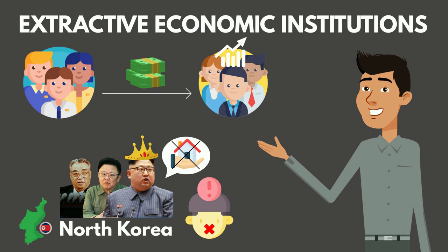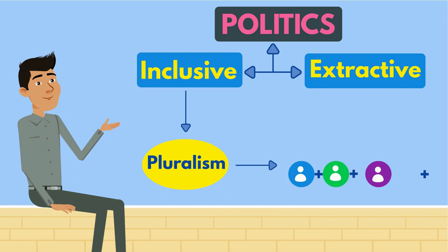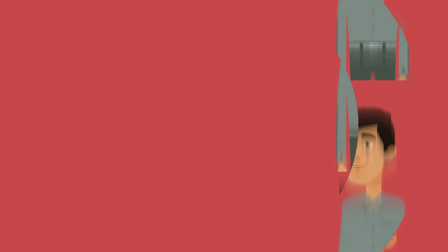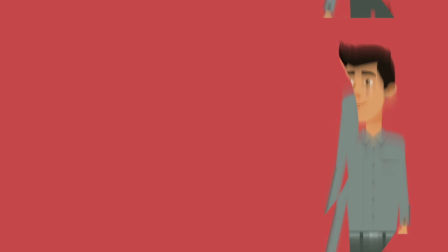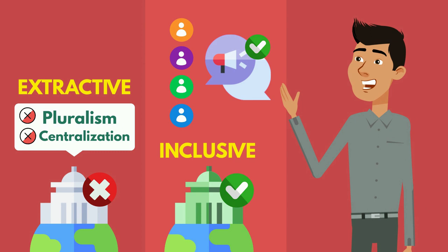An extractive economic institution receives income from one group in society for the benefit of another group. An example is colonial Latin America, built on the exploitation of indigenous people to benefit colonizers. Another example is North Korea, where the Kim family created a repressive regime that didn't allow private property and secured all power for the select elite only. Similarly, politics can also be either inclusive or extractive. An inclusive political institution has pluralism — every group in society is represented politically — and needs centralized power to uphold the rule of law. Without pluralism or centralization, institutions are extractive.